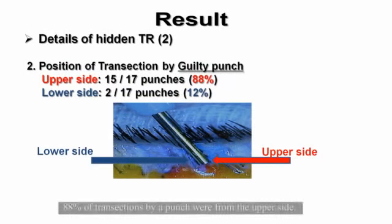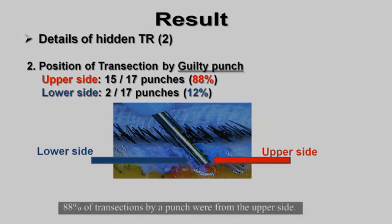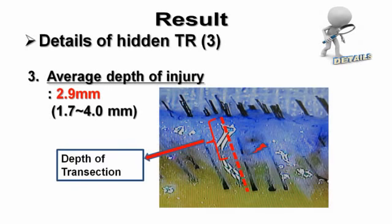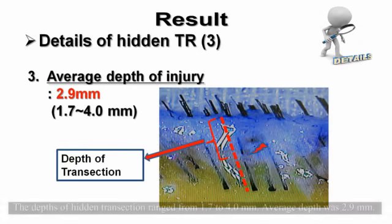88% of transections by a punch were from the upper side. The depths of hidden transection ranged from 1.7 to 4 millimeters, with an average depth of 2.9 millimeters.